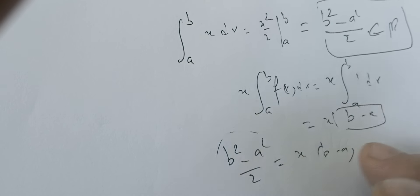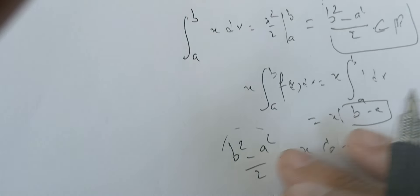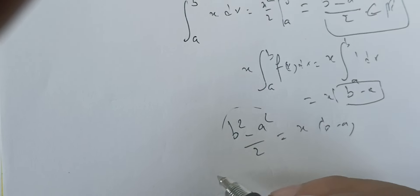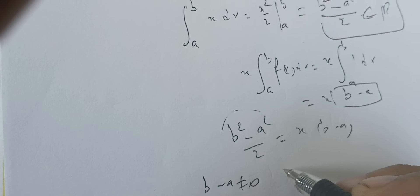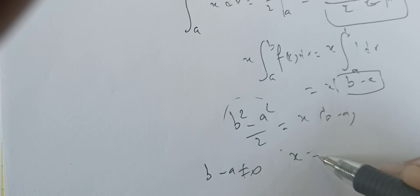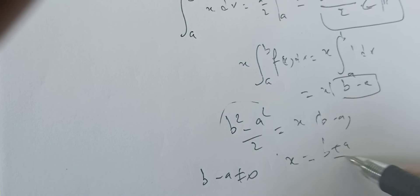This is false all the time because we can assume that b minus a is different from zero, and we can solve here and say that x equals (b plus a) over 2.